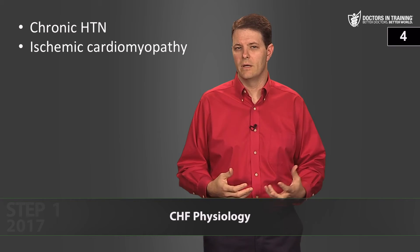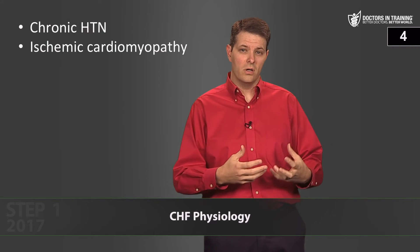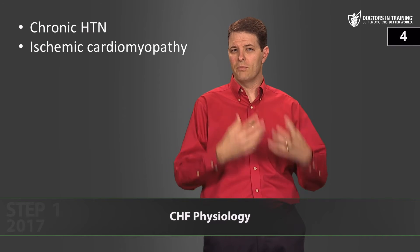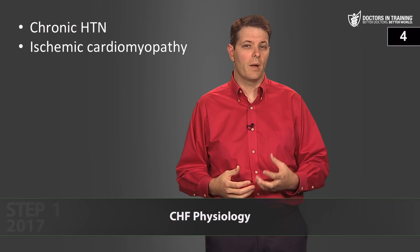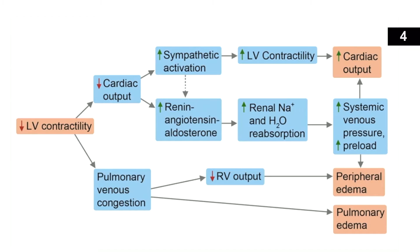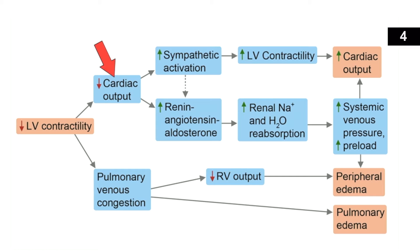Decreased left ventricular contractility causes two things: decreased cardiac output and pulmonary venous congestion. Low cardiac output will decrease blood pressure, and the body wants to compensate. There are two main ways it tries: activating the sympathetic nervous system and activating the renin-angiotensin-aldosterone system. Both mechanisms do work to get cardiac output back up somewhat, but they also have negative consequences.